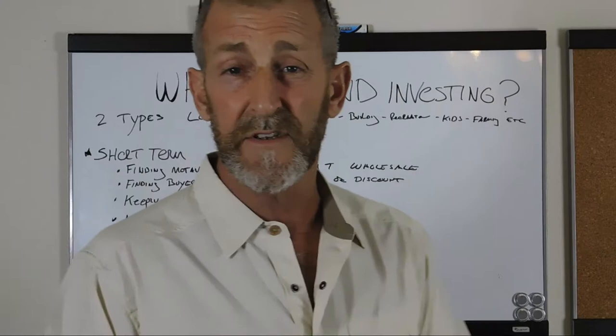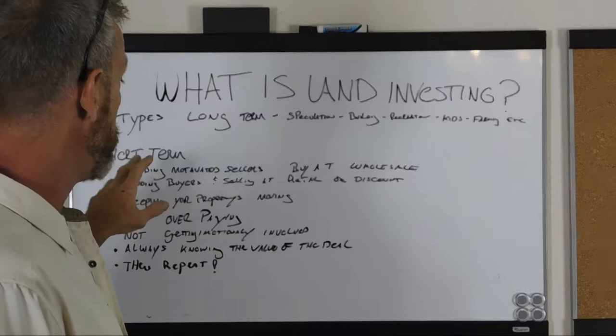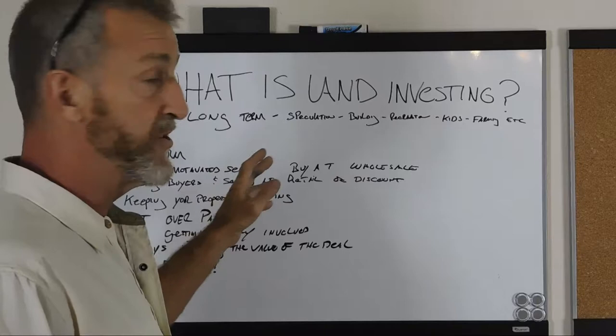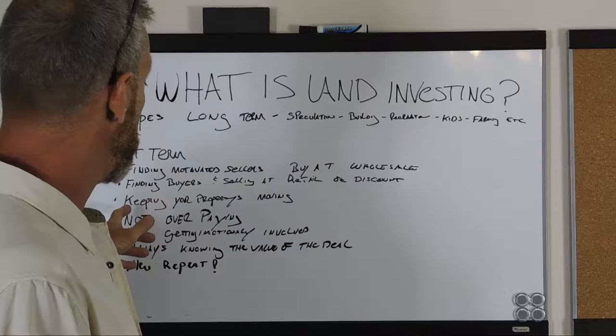But basically what I want to talk about is short term investing. Here's kind of the rundown — this is really the basics. Short term investing: what you're trying to do is find motivated sellers and buy at wholesale. Then you're going to find motivated buyers and sell at retail or a discount. You've got to always keep your properties moving — that's key. You want to buy them and sell them. Always keep your money moving.